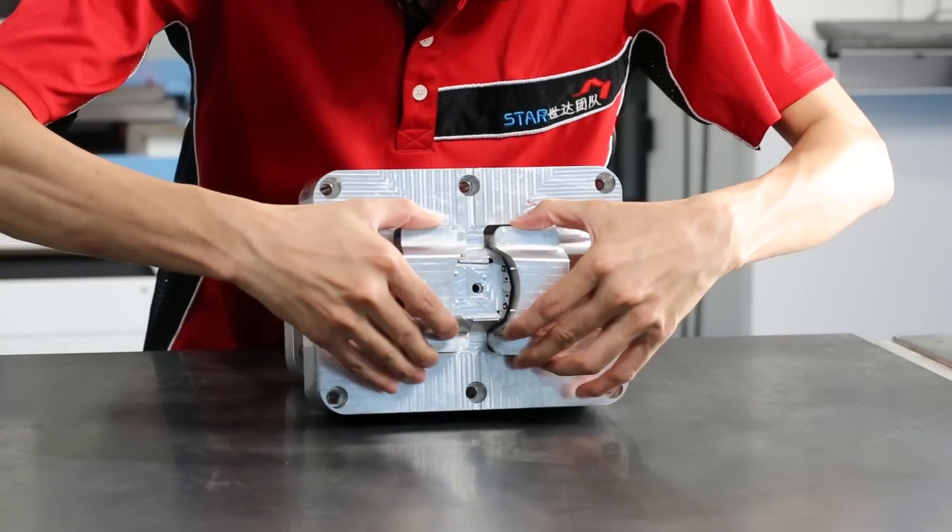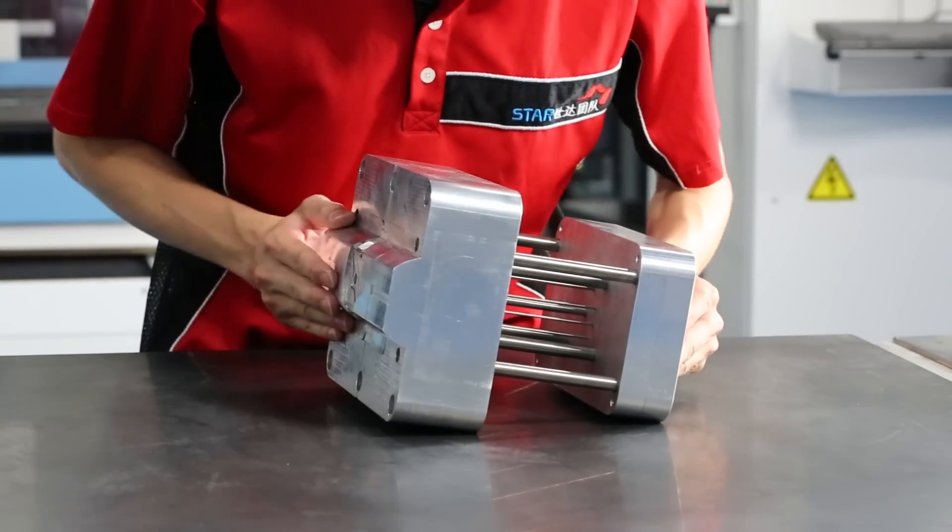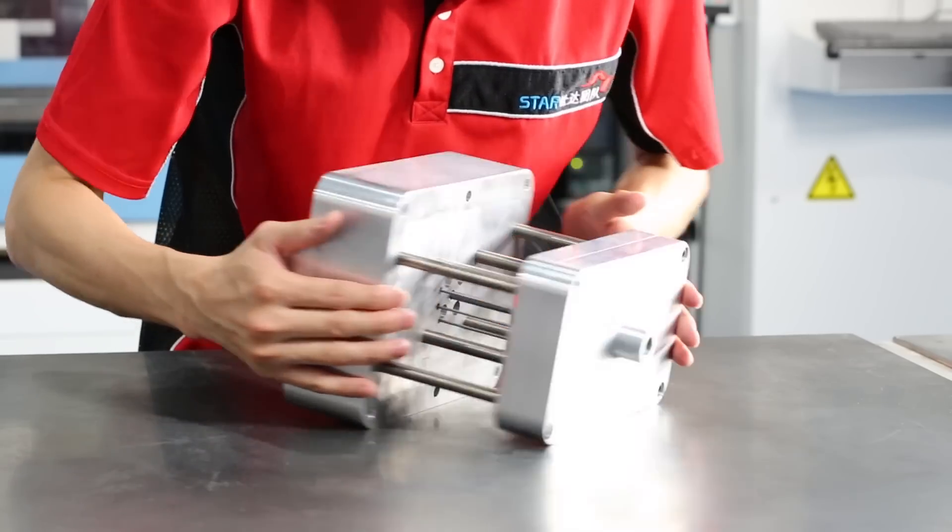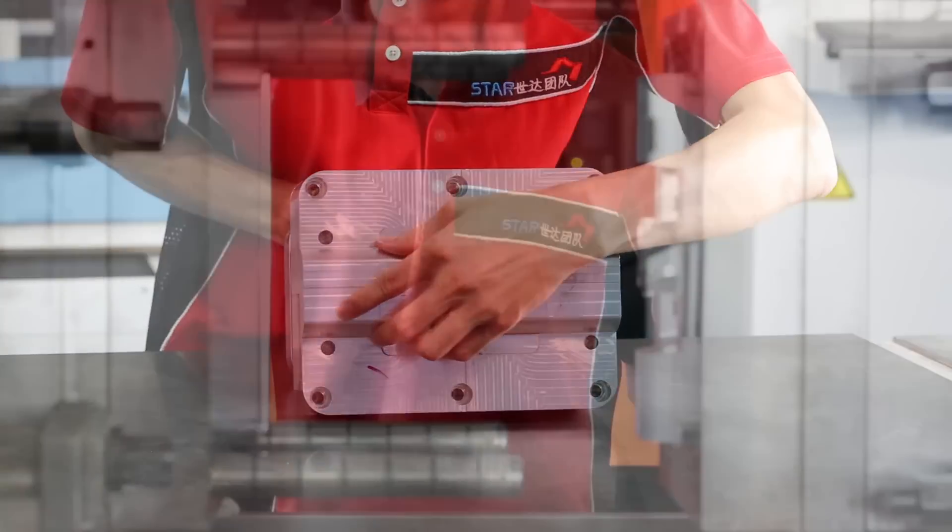Here we are fitting two hand loaded inserts into one half of our standard insert system to form some features that are at 90 degrees to the main pull of the part. We can also use traditional sliders for larger quantities of parts.